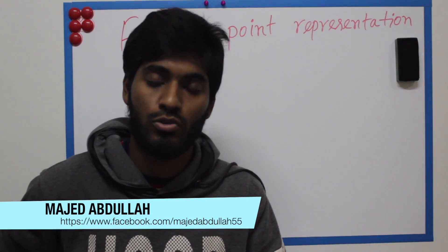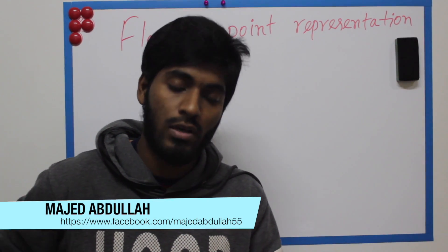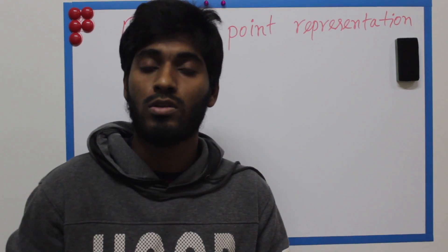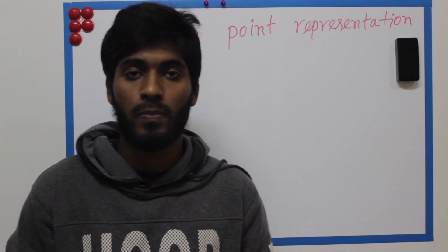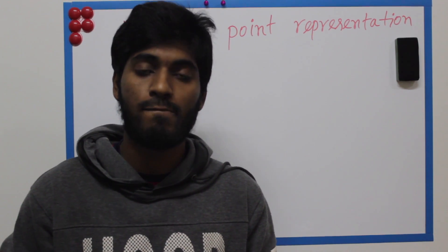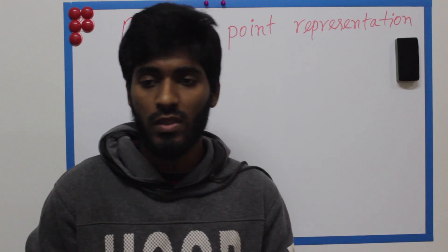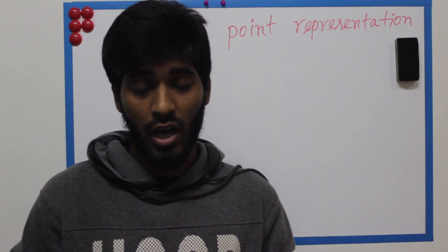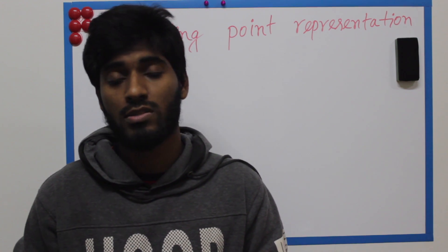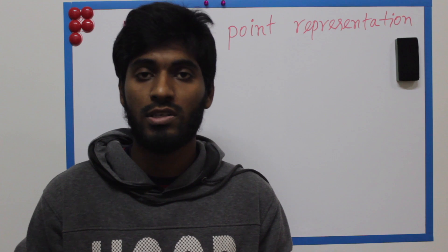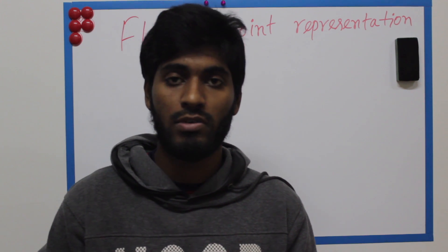Assalamualaikum, welcome back to the video. In the last question, we have seen the sign magnitude, one's complement, and two's complement. In our tutorial, we have a floating point representation. The floating point representation is the reason that the sign magnitude, one's complement, and two's complement is the same value of the integer number.